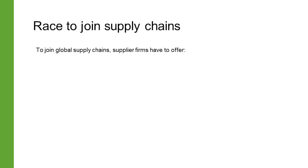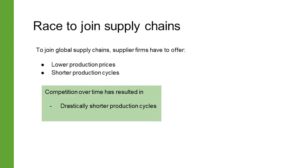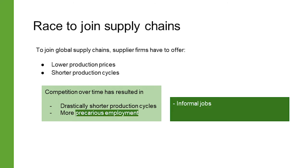Suppliers also have fewer options — they must compete globally to become part of the global supply chain. In such a buyer's market, lead firms have the power to set lower production prices and demand shorter lead times. With increased pressure from lead firms, the time between the start of production and shipping has been dramatically shortened. Such squeezing of production price and the production cycle means that employment within global supply chains is too often precarious or informal, involving frequent labor rights and human rights violations.